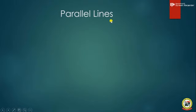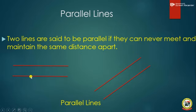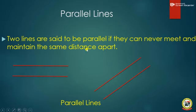Parallel lines — this is the third class. We have vertical lines, horizontal lines, and then the third one is parallel lines. Two lines are said to be parallel if they can never meet and maintain the same distance apart. Assuming this is line A and this is line B, no matter how line A moves, it can never come in contact with line B because they maintain the same distance. Parallel lines are two lines that can never meet each other and they maintain the same distance apart.